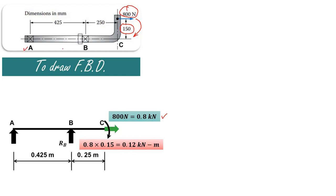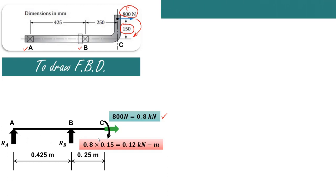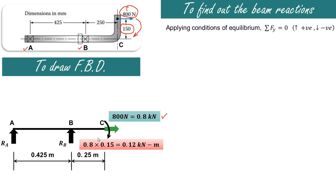At A and B we have bearings, so there are support reactions RA and RB as shown in the figure. This is a simply supported beam with end moment. Since the supports are bearings, we are interested only in vertical forces. Applying the first condition of equilibrium — summation of Fy equals zero, upward positive and downward negative — gives RA plus RB equals zero, since the 0.8 kN force acts horizontally.